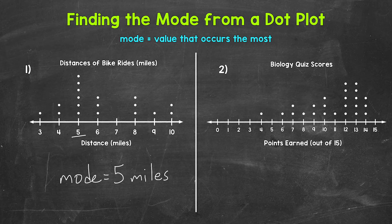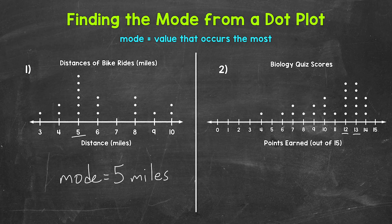Let's move on to number two, where we have a dot plot displaying a class's scores on a biology quiz. The quiz was out of 15 points. So which score, which value occurred the most? Well, 12 and 13 both have five dots above them, so those scores occurred the most. So we have two modes.